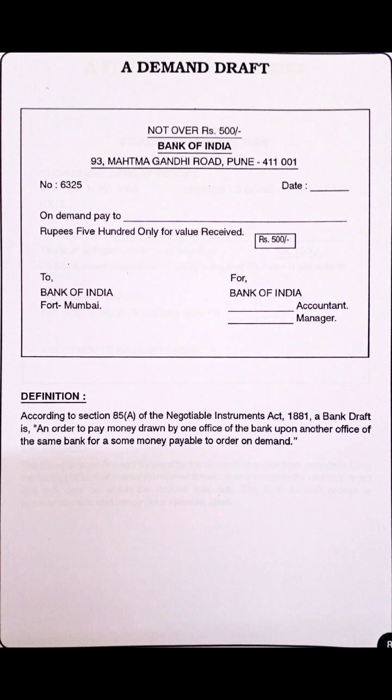On the left-hand side write the number and on the right-hand side write the date. Then write 'demand to pay — rupees 500 only, for value received' and mention the amount. On the left-hand side write 'to Bank of India, Mumbai.' The definition carries two marks and the demand draft or bank draft specimen carries three marks.